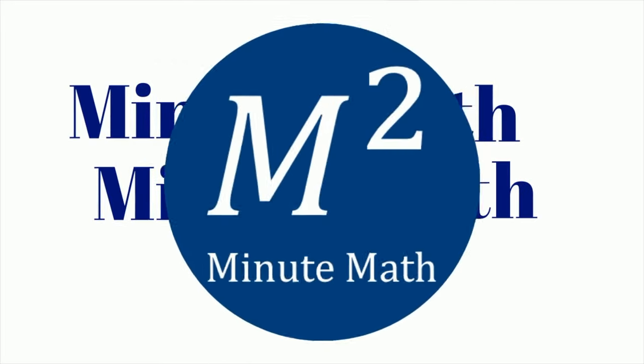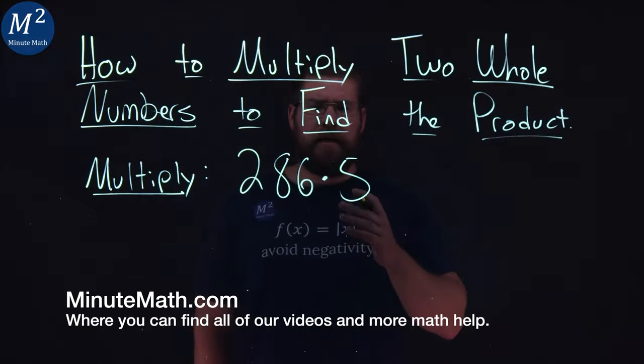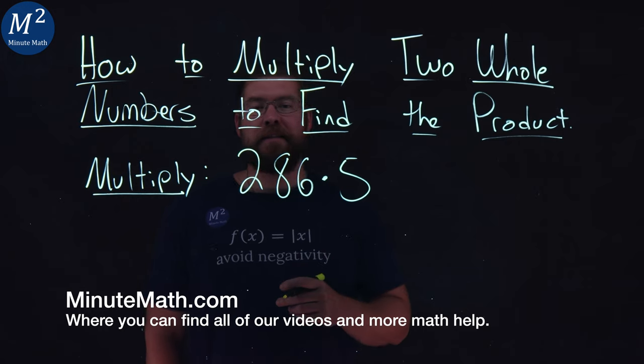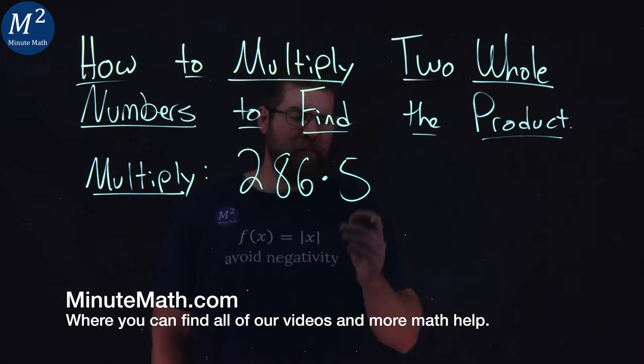When you need help, you use Minute Math. We're given two numbers here, 286 and 5, and we've got to multiply them.